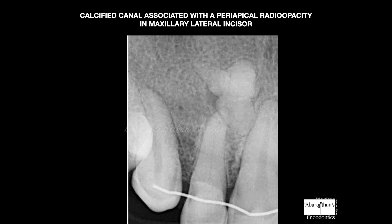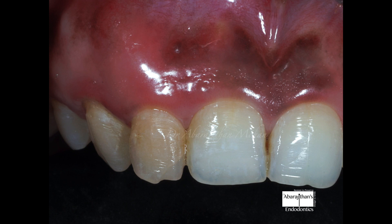This is the case we are going to discuss today. We have a right maxillary lateral incisor with calcified root canal anatomy, and we also see a radiopacity in the periapical region, which makes this case a mystery. This patient was referred by another dentist for management, and I could see a discolored lateral incisor associated with clinical swelling and a sinus tract.